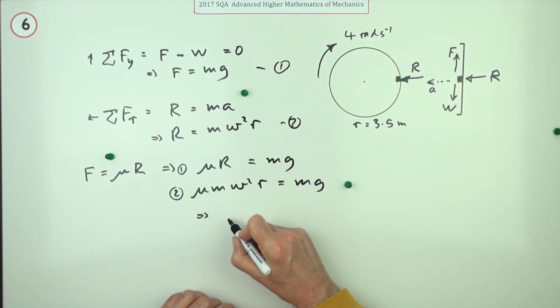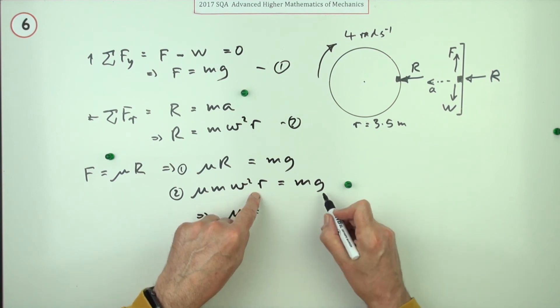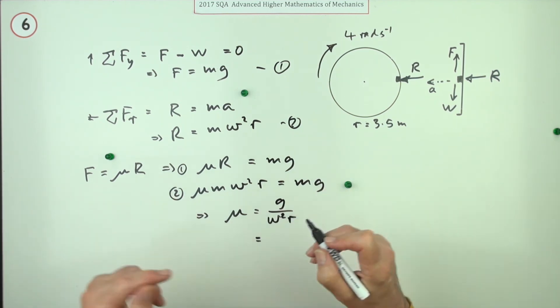Now the m's are going to cancel, so you're left with μ equals ω²R over to the other side - g divided by ω²R. Now put the numbers in, you could have put them in earlier.